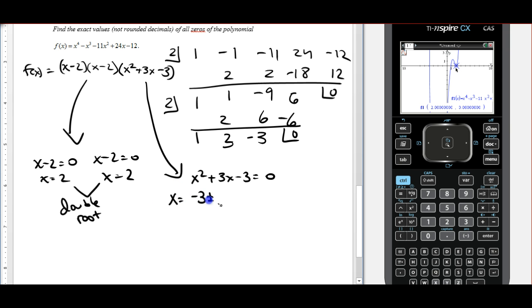So negative b plus or minus the square root of b squared minus 4ac all over 2a. You can sing the song if you like. And we get negative 3 plus or minus the square root of 9 plus 12 is 21 over 2. And there are our other two zeros.